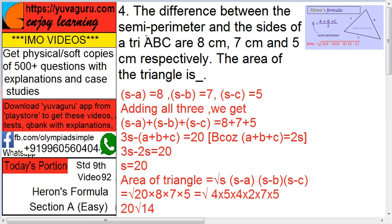The sides of a triangle ABC are 8, 7, and 5 cm respectively. The area of the triangle is... Now, what is semi-perimeter? Perimeter means addition of all three sides, and semi means half of that.